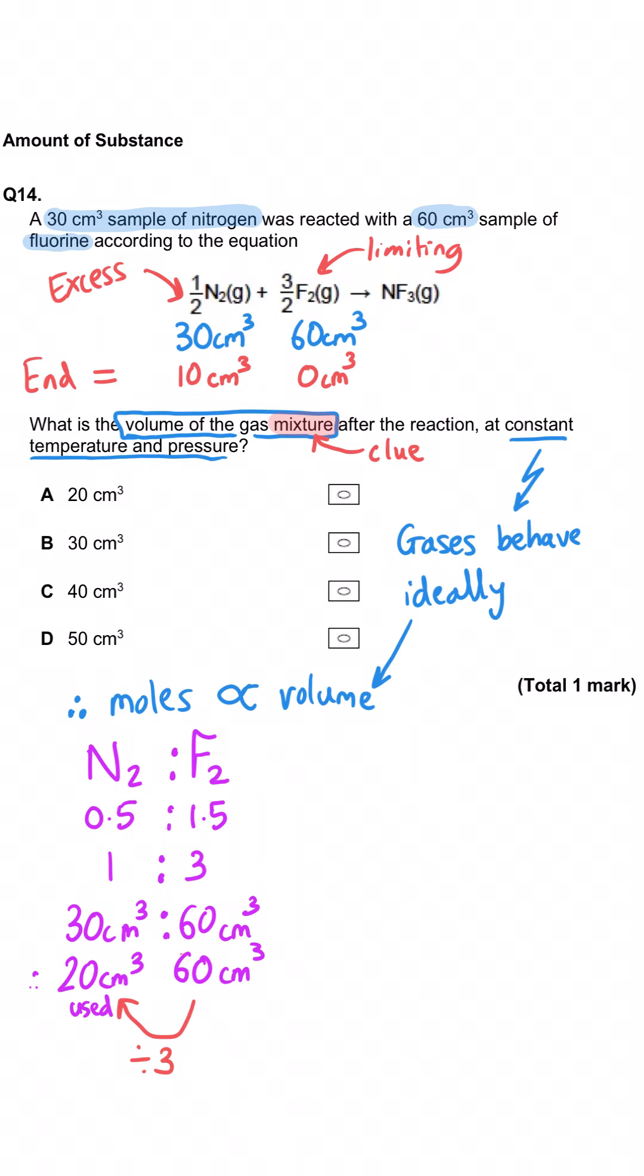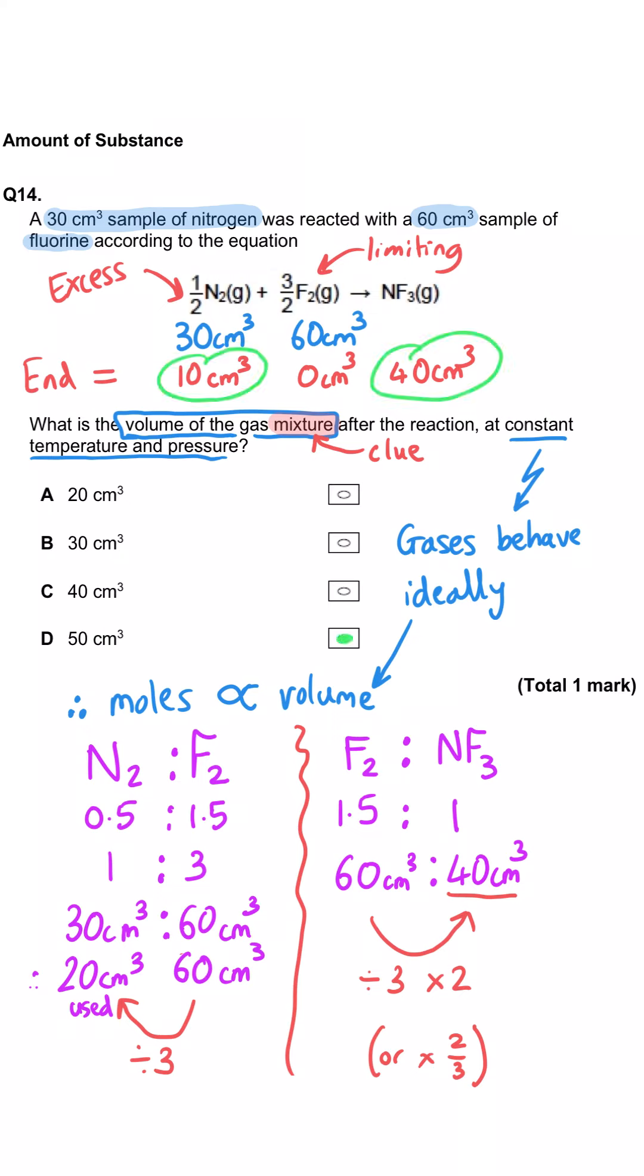There will be 10 cm cubed of nitrogen left over once this reaction has finished. Since we're using all 60 cm cubed of fluorine and the fluorine to nitrogen trifluoride ratio is one and a half to one, we will need two-thirds of the volume of nitrogen trifluoride. We divide 60 by three and multiply by two and see that 40 cm cubed of nitrogen trifluoride will be produced. Combined with the leftover 10 cm cubed of nitrogen, D is the correct answer because there will be 50 cm cubed of gas in the mixture.